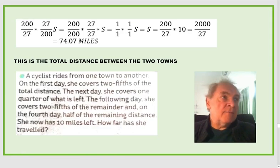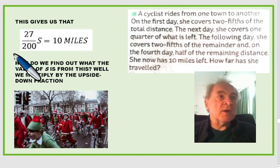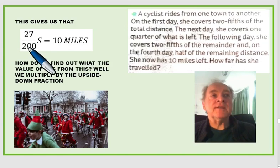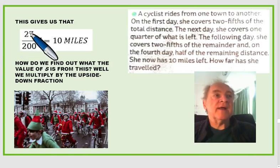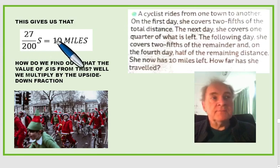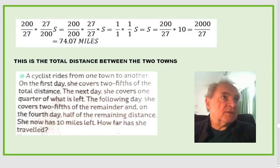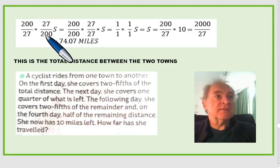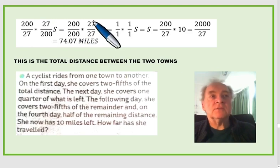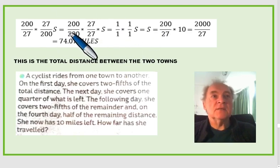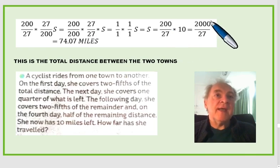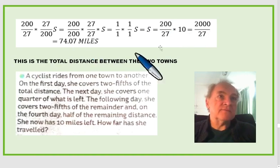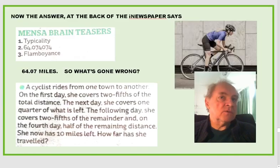To work out what s is, we multiply both sides of the equation by two hundred over twenty-seven, because that will make the fraction cancel on the left. Two hundred over twenty-seven times twenty-seven over two hundred times s gives one times s, which equals s. On the right, we have ten times two hundred over twenty-seven, which gives two thousand over twenty-seven. This works out to approximately seventy-four point zero seven miles.